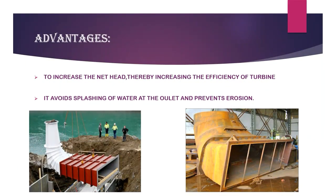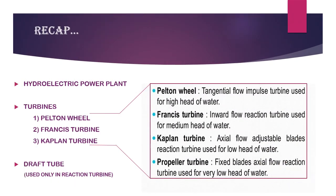The advantage of the draft tube is that it creates negative pressure, increasing efficiency. It also avoids splashing of water at the tailrace, preventing soil erosion.